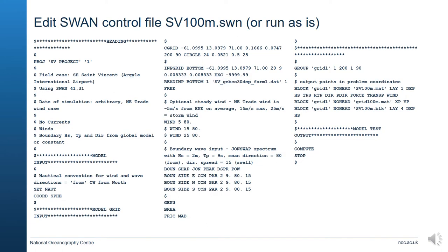The model control file for running SWAN is really quite simple. You can get a very first-order look at wave conditions without worrying about complicated physics. Looking at the lines not commented out by a dollar sign: the first actual command is SET NAUT, which tells the model you are running in the nautical convention for wind and wave directions — i.e., compass direction from north. The second command is COORD SPHERE, which means it is using latitude-longitude spherical coordinates. You can also use Cartesian coordinates, but spherical is useful if you intend to embed the model within a larger or global wave model.